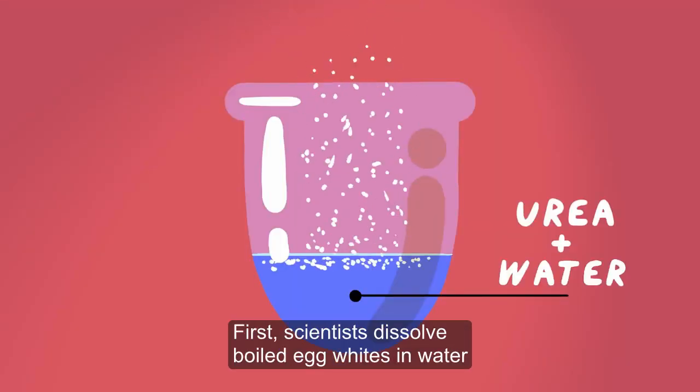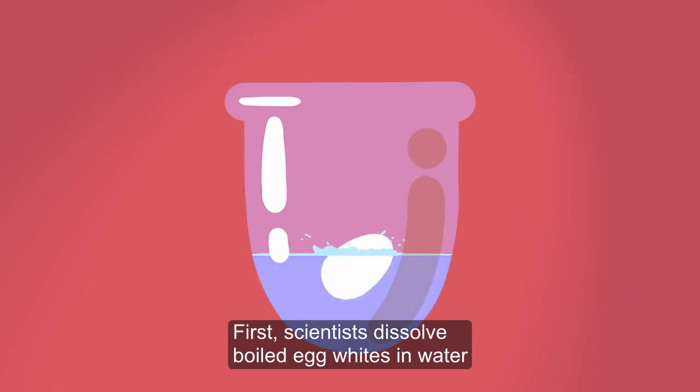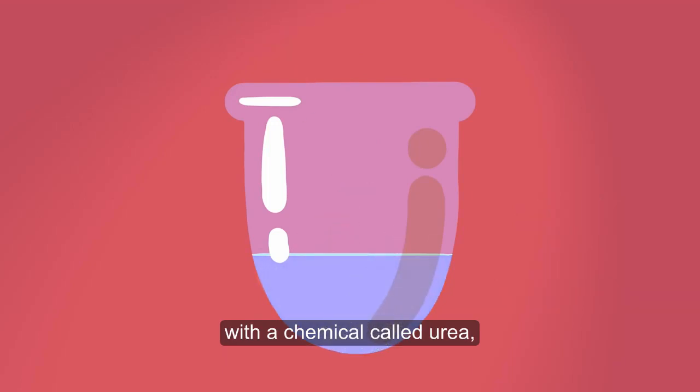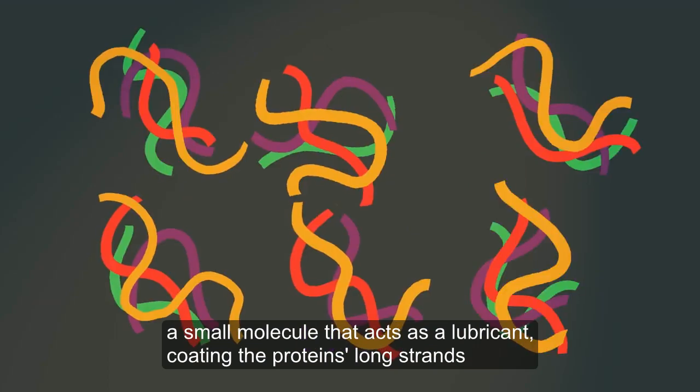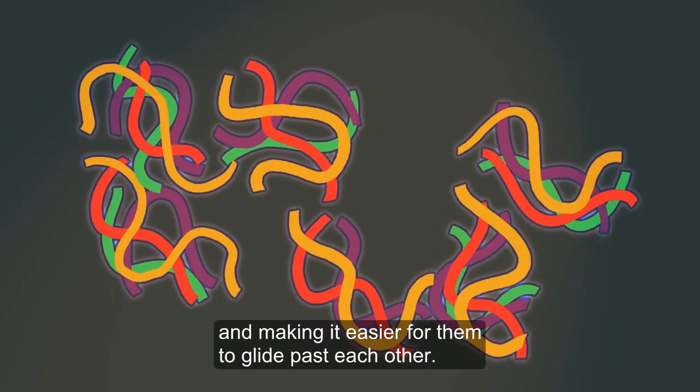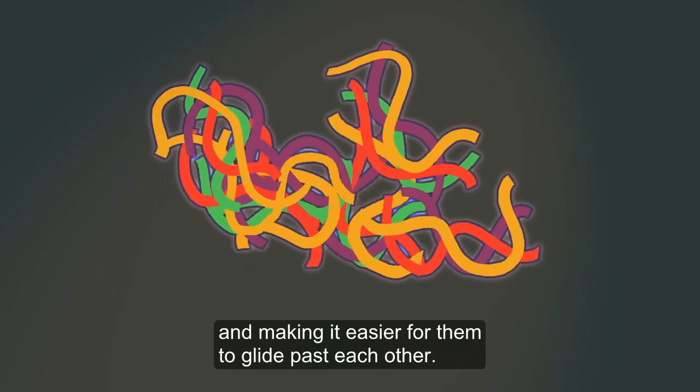Here's how it works. First, scientists dissolve boiled egg whites in water with a chemical called urea, a small molecule that acts as a lubricant, coating the protein's long strands and making it easier for them to glide past each other.